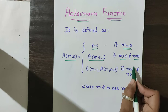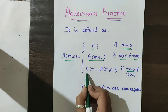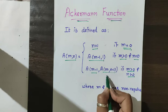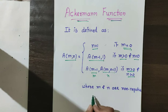And if m is not equal to 0 and n is not equal to 0 — that means m and n both are greater than 0 — then a(m,n) equals a(m minus 1, a(m, n minus 1)).